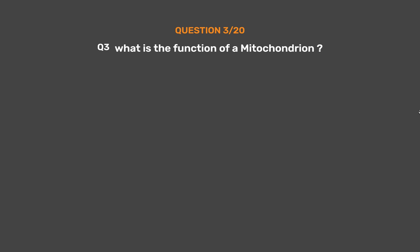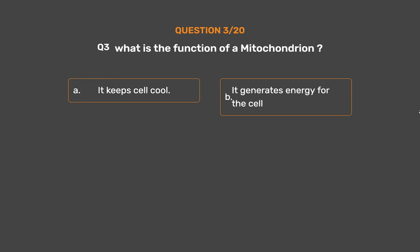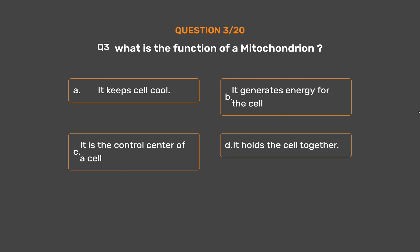Question number 3. What is the function of a mitochondrion? Option A: It keeps the cell cool. Option B: It generates energy for the cell. Option C: It is the control center of a cell. Option D: It holds the cell together.